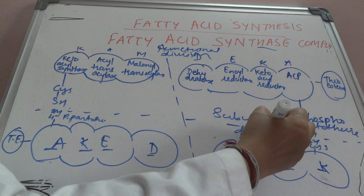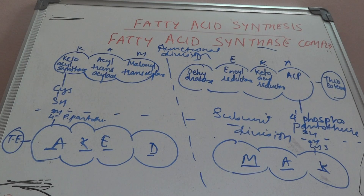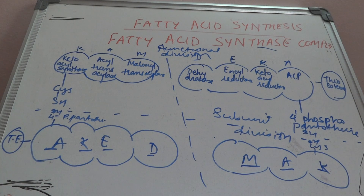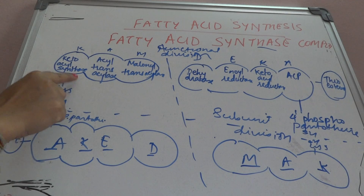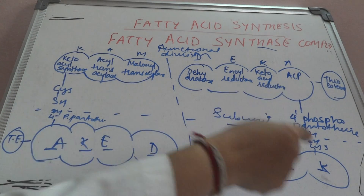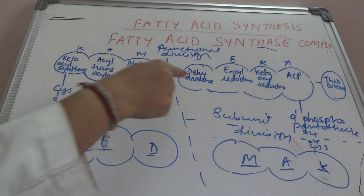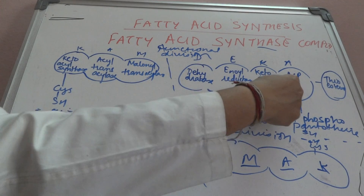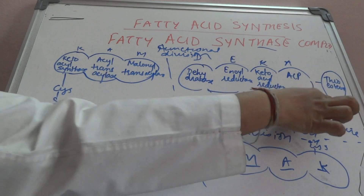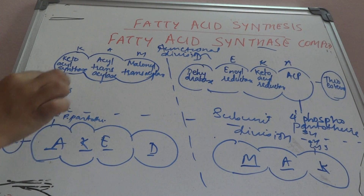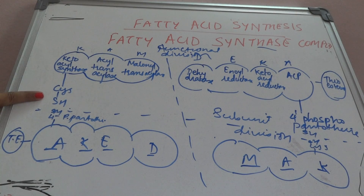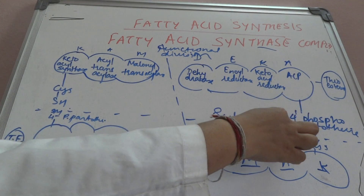If you remember this diagram, it becomes easy to write fatty acid synthesis. The first two reactions are: formation of acetyl-CoA from pyruvate, and formation of malonyl-CoA from acetyl-CoA. Then you draw the fatty acid synthase complex using K-A-M-D-E-K-A: Ketoacyl Synthase, Acyl Transacylase, Malonyl Transacylase, Dehydratase, Enoyl Reductase, Ketoacyl Reductase, Acyl Carrier Protein. Acyl Carrier Protein is attached to Thioesterase in both parts. Ketoacyl Synthase is always attached to Cysteine-SH, and Acyl Carrier Protein is attached to 4-prime Phosphopantotheine.